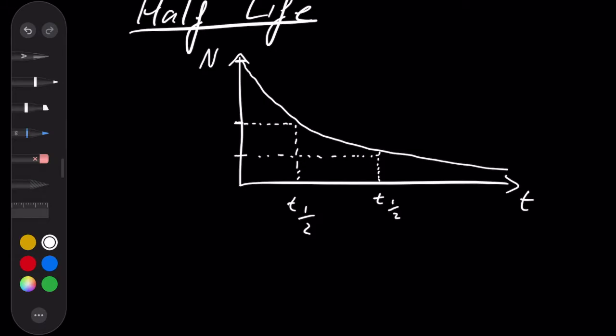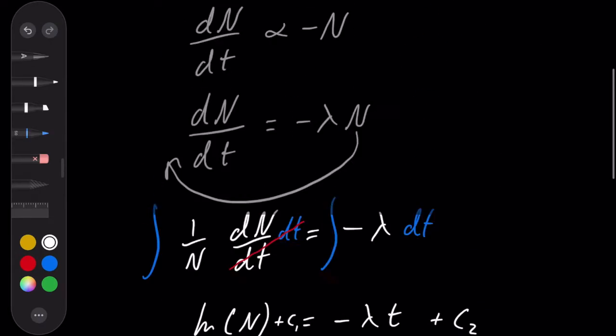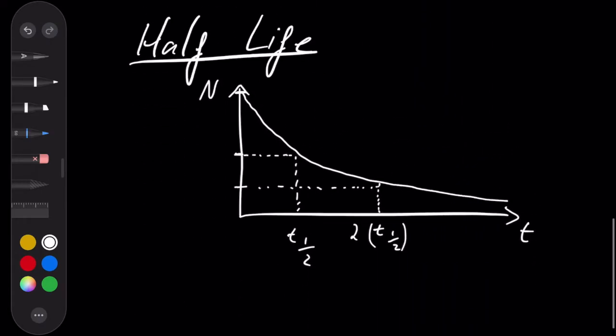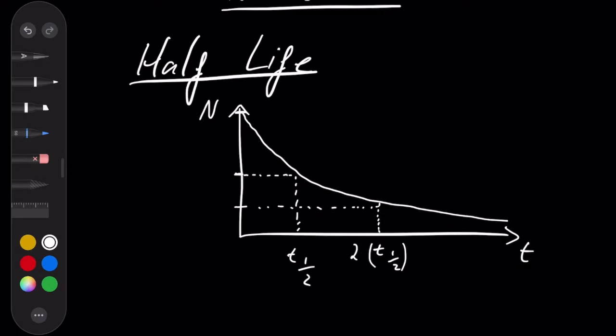I suppose that should be 2 times the half-life. And I can keep doing this as many times as I like, plotting across, reading down, and getting another half-life.